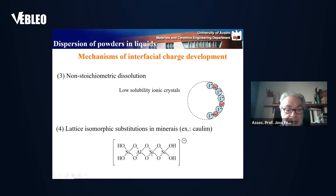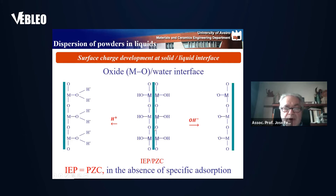Another mechanism is lattice isomorphic substitutions. For example, if you replace silicon in the network of kaolinite by aluminium, it is equivalent to adding a negative charge. So the surface charge that develops at the surface of the particles is pH-dependent, and there is a given pH at which there is no net charge at the surface. This pH is known as the isoelectric point or point of zero charge.